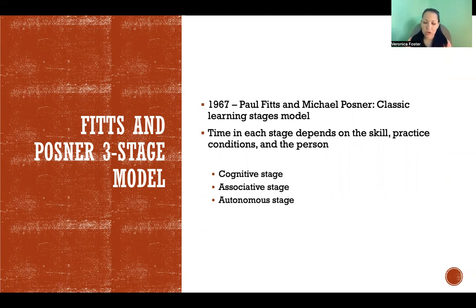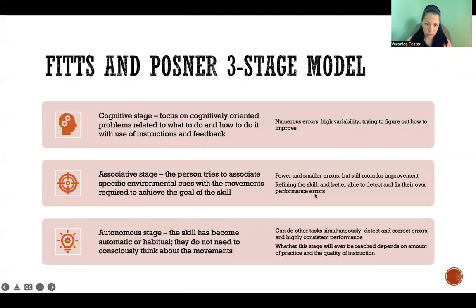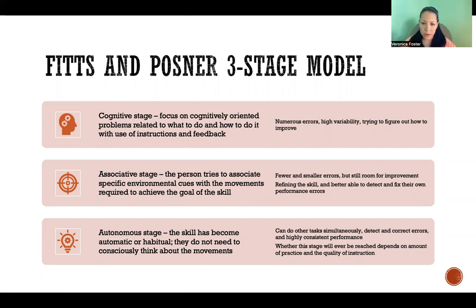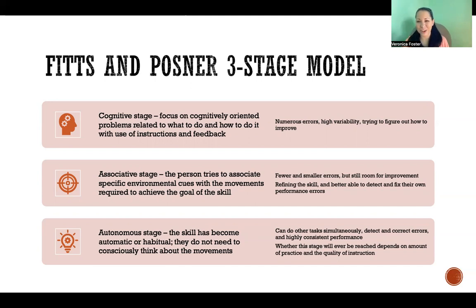There are three stages: the cognitive stage, the associative stage, and the autonomous stage. The cognitive stage is the first stage where beginners are starting to learn a skill. They're focusing on cognitively oriented problems related to what to do and how to do it, using instructions and feedback. The person is cognitively thinking about every little step — how to move and what angle to be at — while receiving instructions and feedback to catch and correct errors. They're making lots of errors, which can be very large, with a lot of variability from one attempt to the next, as they try to figure out how to improve by thinking heavily and trying to control their movement.